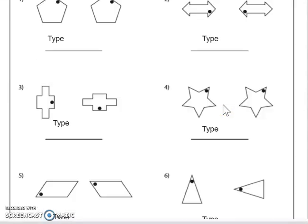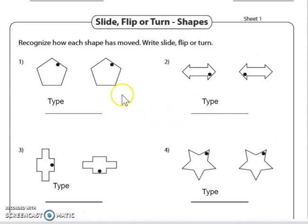Alright, so starting on number one, we need to look. Did they slide or translate this shape? Did they reflect it, or did they rotate it? Well, it doesn't look like it was spun in any direction. It looks like it stayed the same, so it was not a rotation.